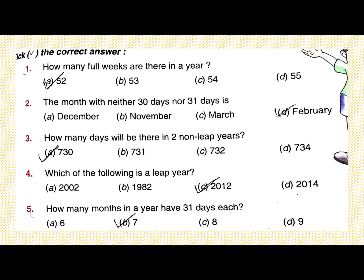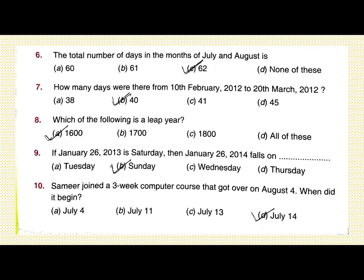Question number 6: the total number of days in the months of July and August. July has 31 days and August also has 31 days. So 31 plus 31 equals 62 days. Part C is correct.